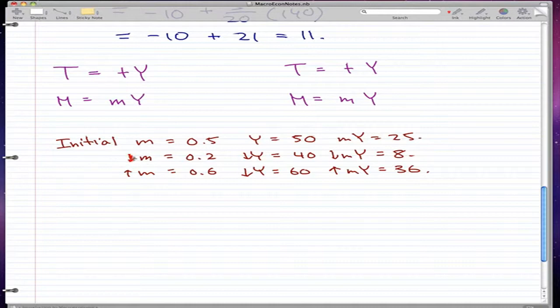If m drops to 0.2 from 0.5, and y drops from 50 to 40, then when we times m and y it will equal 8. Similarly, if m rises from 0.5 to 0.6 and y rises...